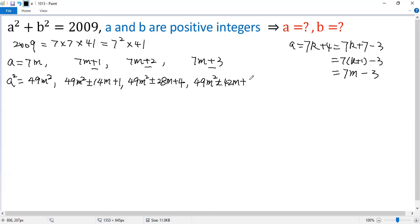But we can write 9 as 7 plus 2. So you see, that is divisible by 7, this part is divisible by 7. So the remainder of a squared divided by 7 would be, right here, would be 0,